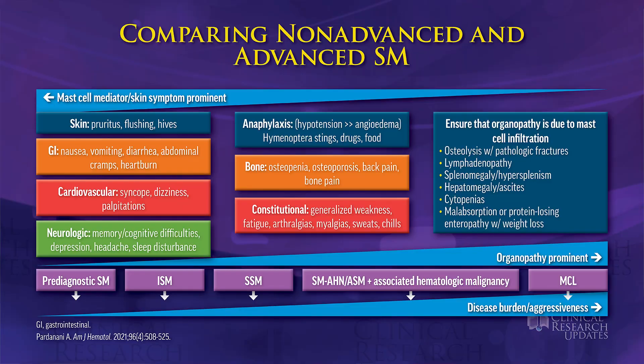What are the key differences between advanced and non-advanced SM? We cannot really, based on symptoms, differentiate advanced versus non-advanced. Patients with non-advanced systemic mastocytosis can have a lot of debilitating symptoms, such as anaphylaxis, flushing, gastrointestinal symptoms, and brain fog. Some of these patients, even with indolent disease, will have anaphylaxis with hypotension, and they really need a good workup with an allergist immunologist.